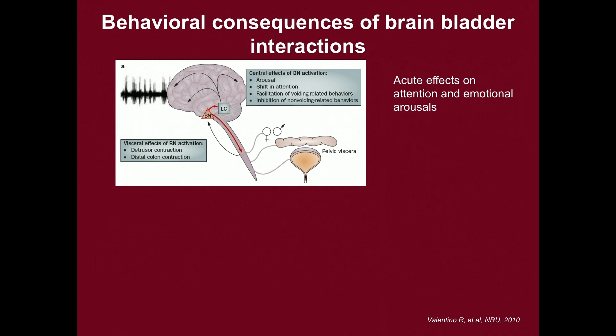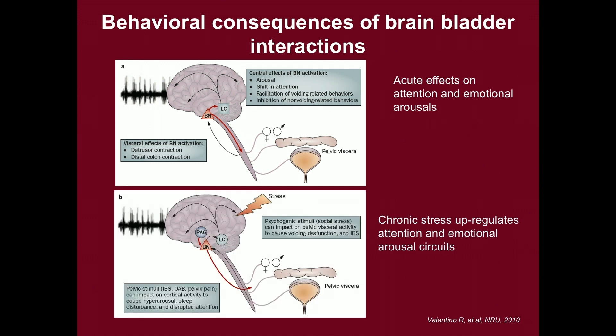This concept is borrowed from Rita Valentino at Penn. The Barrington nucleus, which is part of the micturition center, is involved in a whole network in the brain of attention and emotion. Acute effects can lead to attentional or emotional arousal — there's some reason why we need to shift our attention to be able to urinate, just normally. When this is altered, if somebody is exposed to chronic stress, the whole mechanism of attention and emotionality can become involved with our micturition responses.